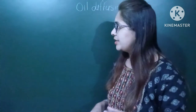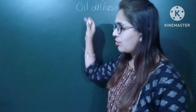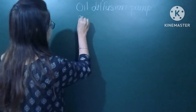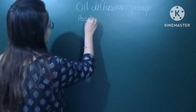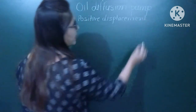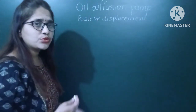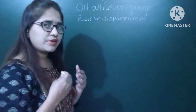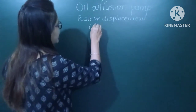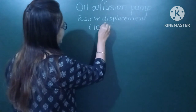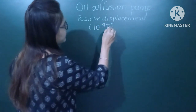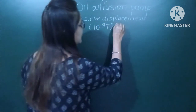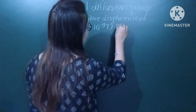So the first thing to note is that the oil diffusion pump is a positive displacement pump. It can be used to generate a very high vacuum of nearly 10⁻⁹ torr, and it is of the kinetic type.